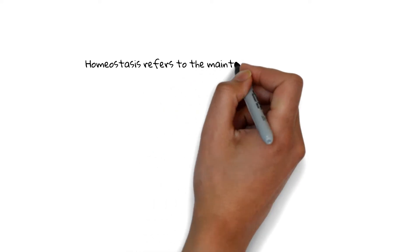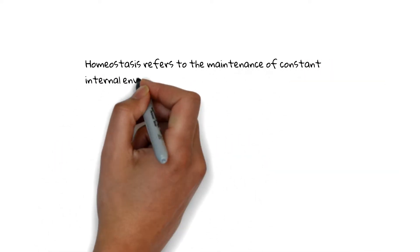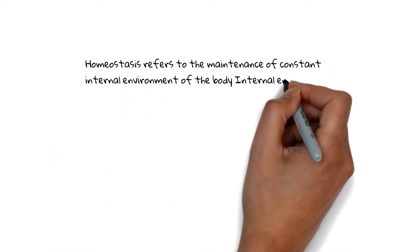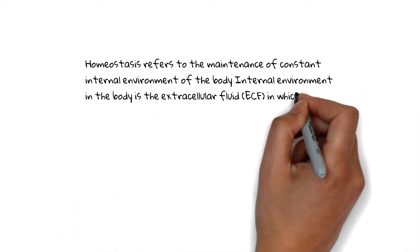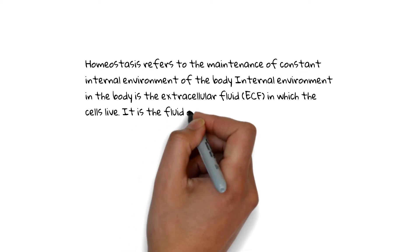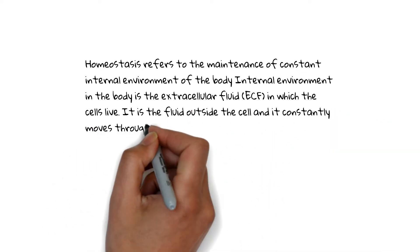Homeostasis refers to the maintenance of the constant internal environment of the body. The internal environment in the body is the extracellular fluid in which the cells live. It is the fluid outside the cell constantly moving throughout the body.